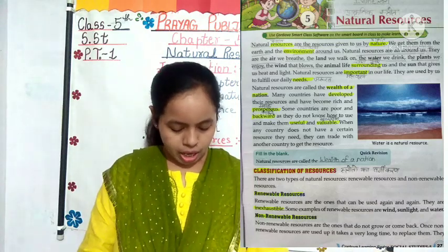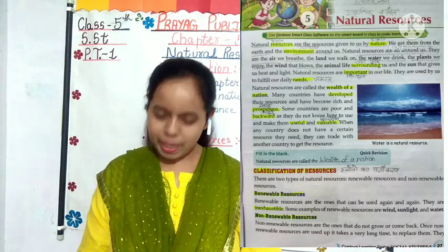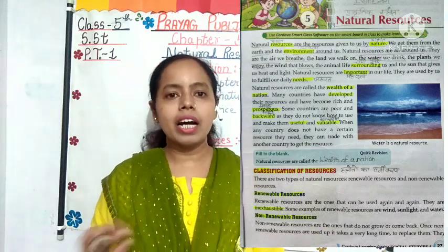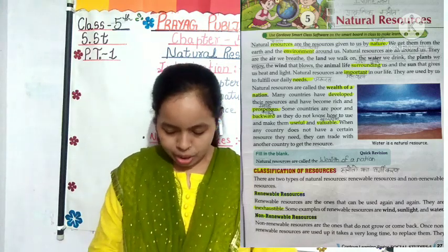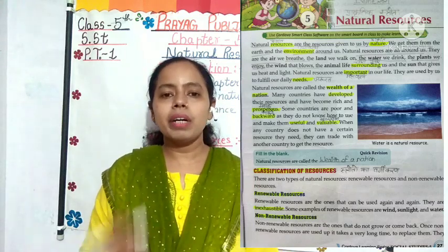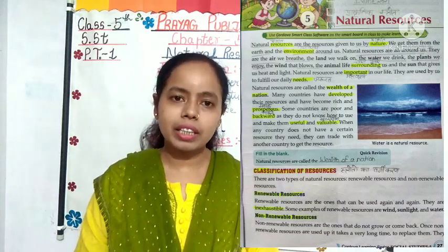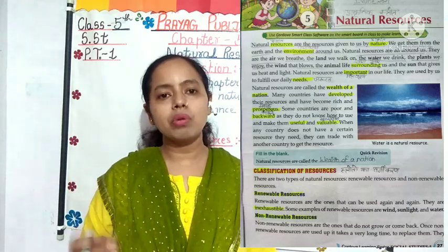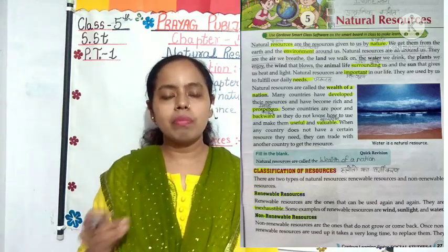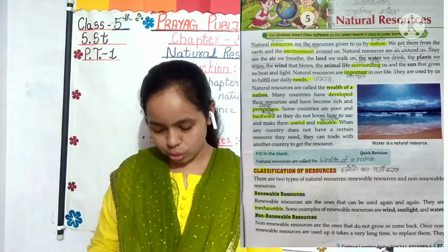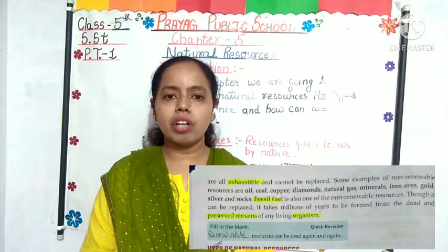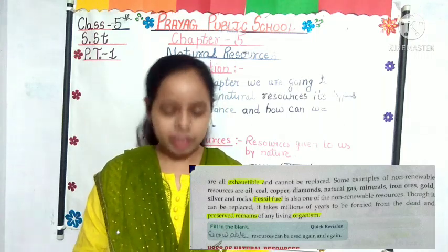Now next are non-renewable resources. Non-renewable resources are the ones that do not grow or come back. Students, non-renewable resources are those that do not grow quickly or form quickly — once they are exhausted, we will not get them again. Once non-renewable resources are used up, it takes a very long time to replace them. If we use non-renewable natural resources once, either they don't form again at all, or it takes thousands of years for them to form. They can be exhausted and they are not quickly replaced.